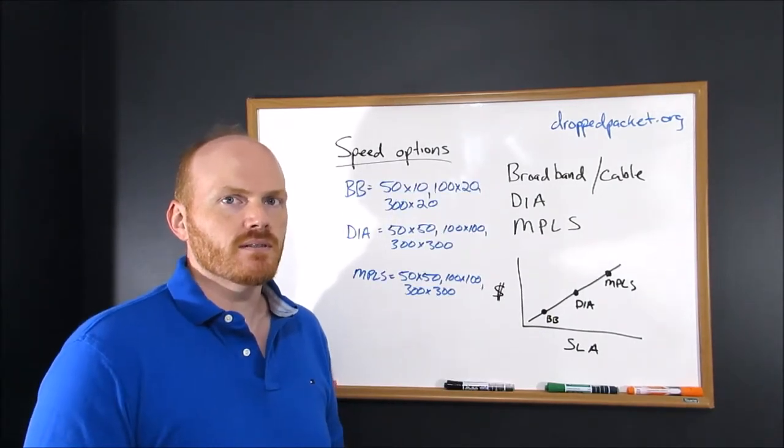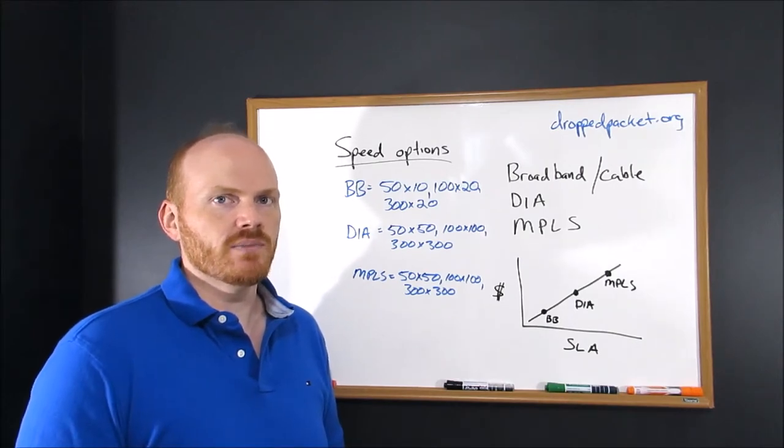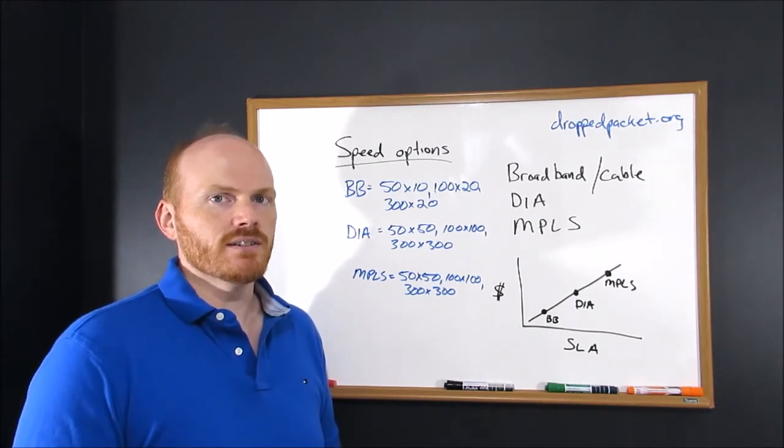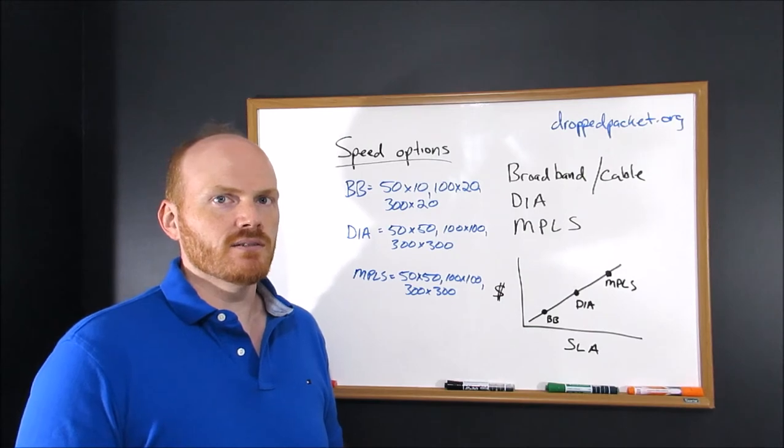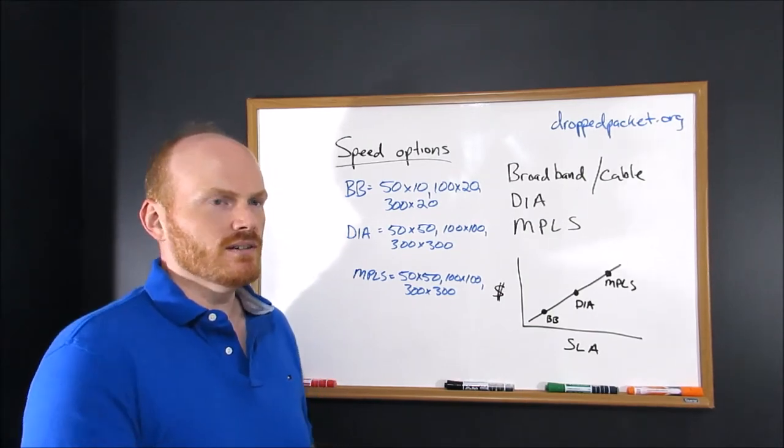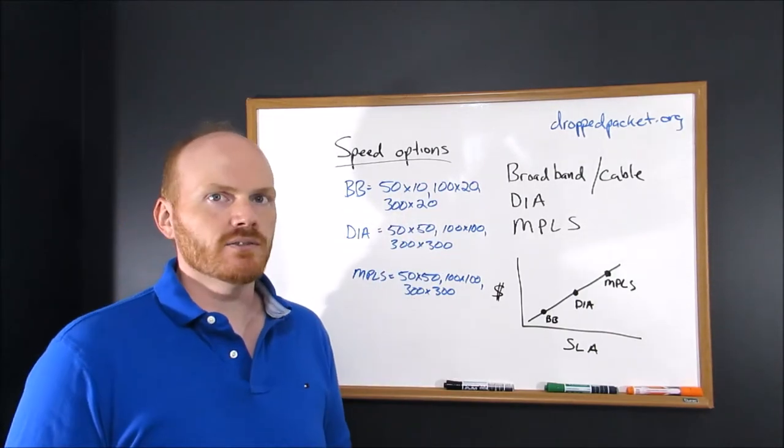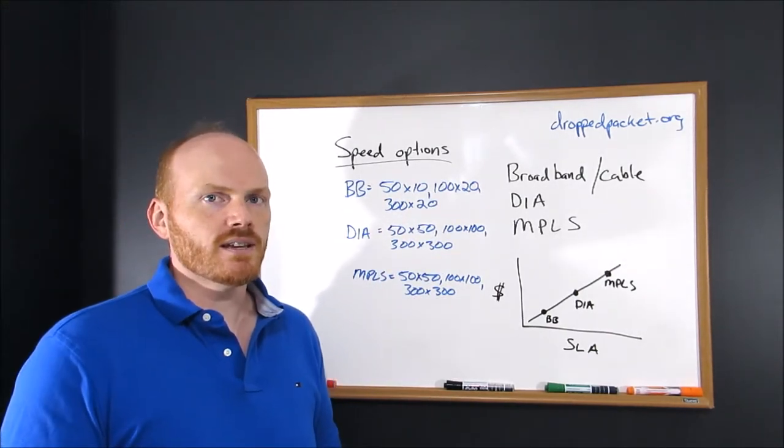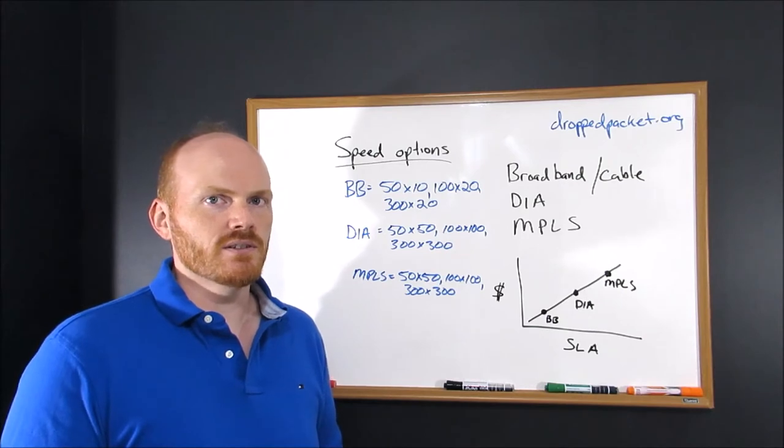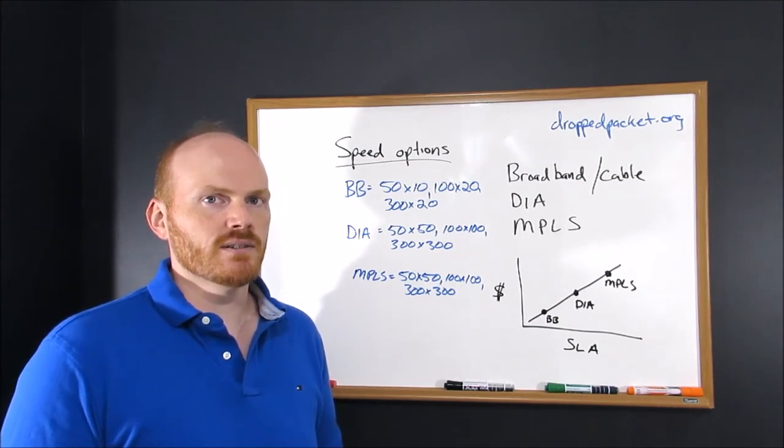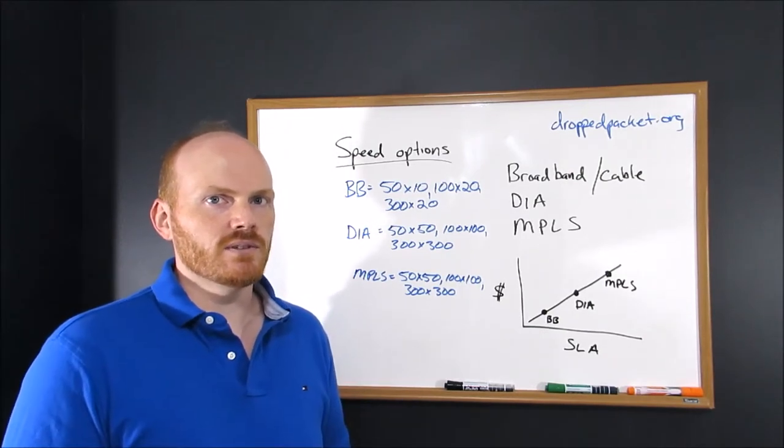For speed options, the thing to keep in mind here is broadband is typically asymmetrical. So you're going to have a really large download speed and usually a limited upload speed. Some examples of that are 50 by 10, 100 by 20, 300 by 20. This excludes services that are symmetrical or near symmetrical, such as Fios. This is typically what a cable company will give you.